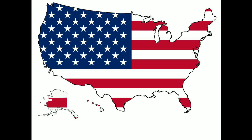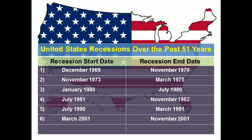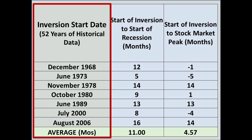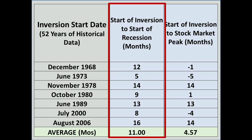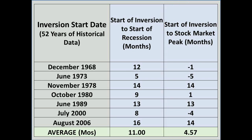Over the past 52 years, the United States has gone through seven business cycles and thus seven recessions. Here are the recession start and end dates for all of those downturns — each a normal part of the cyclical nature of the business cycle. For each recession and the market correction that preceded it, we meticulously gathered and checked data against several sources. The left column shows the starting date of the 3-month and 10-year yield curve inversion, the second column shows months from the inversion start to the recession start, and the third shows months from the inversion start to the stock market peak.